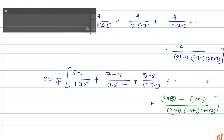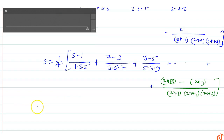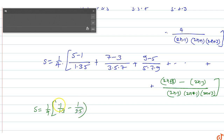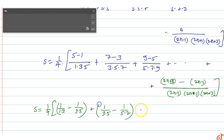S is equal to 1 by 4 times the sum. After dividing, we get: 1 upon 1 into 3 minus 1 upon 3 into 5, plus 1 upon 3 into 5 minus 1 upon 5 into 7, and so on — a telescoping series.